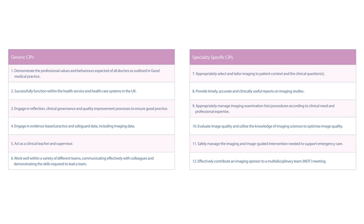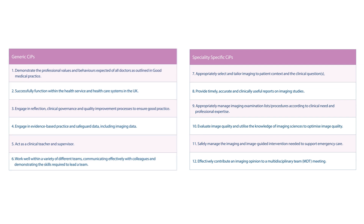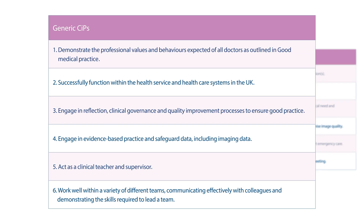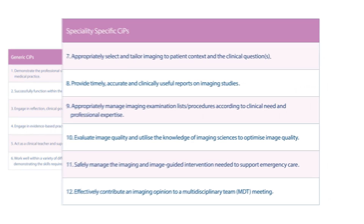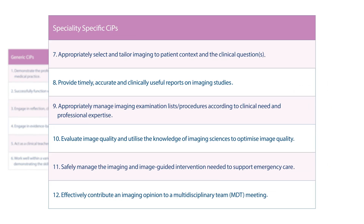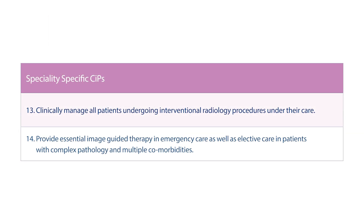The Clinical Radiology curriculum has twelve SIPs, which describe what a trainee should be able to do by the time they become a consultant. The first six are generic and reflect capabilities expected of all doctors, such as communication and teaching skills. The remaining six are specific to radiology. There are an extra two SIPs that interventional radiology trainees will need to achieve, in addition to those in the Clinical Radiology curriculum.